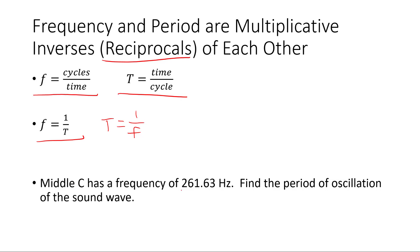So, middle C has a frequency of 261.63 hertz. Find the period of oscillation of the sound wave. Well, period is just 1 over frequency. And so we do 1 over 261.63 hertz. Taking the reciprocal gives us 3.8222 times 10 to the minus 3 seconds, or 3.822 milliseconds.